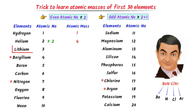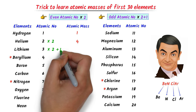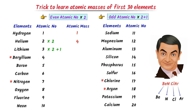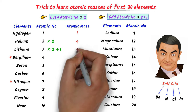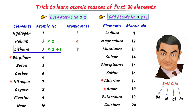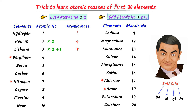The atomic number of lithium is 3. It is an odd number. I multiply it by 2 and add 1 to it. I get 7. Hence, the atomic mass of lithium is 7. We know that beryllium is an exception case, so I leave it.